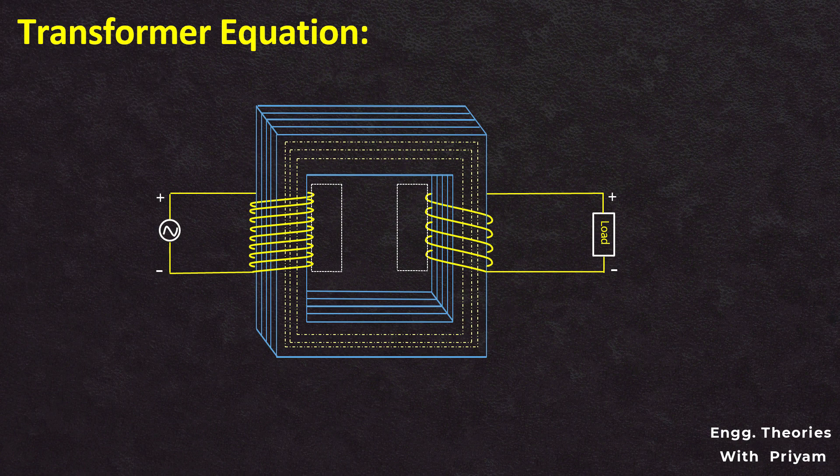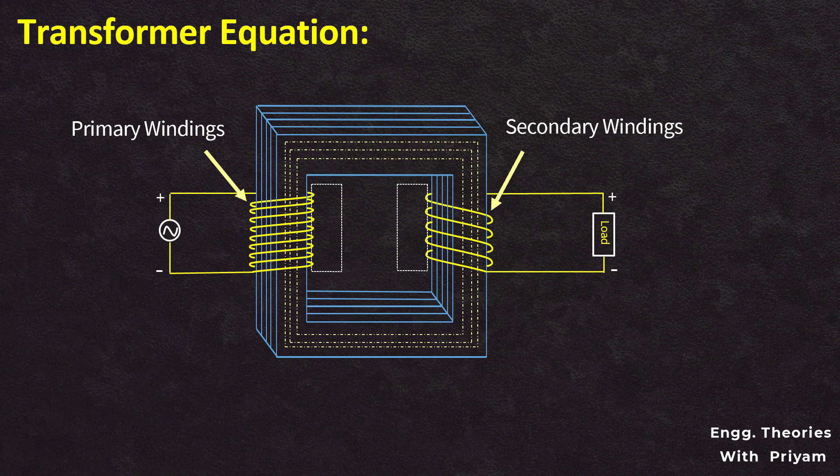In the primary side, we have primary winding or primary coil, which has N1 number of turns. In the secondary side, we have secondary winding or secondary coil, where the number of turns is equal to N2.